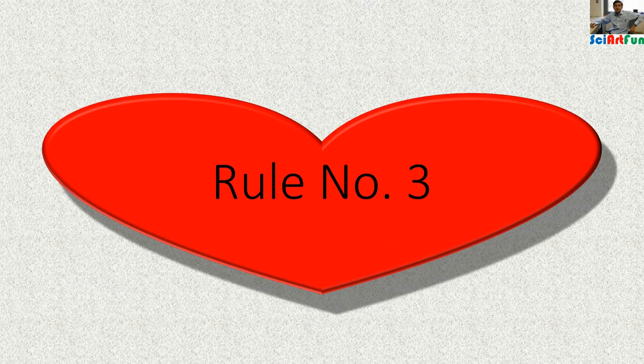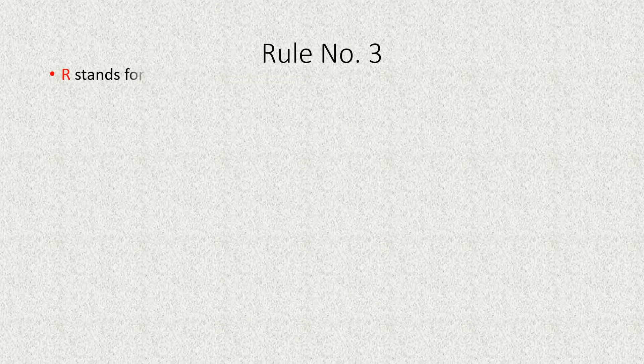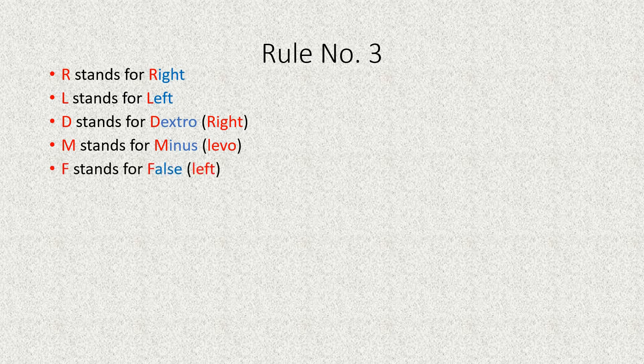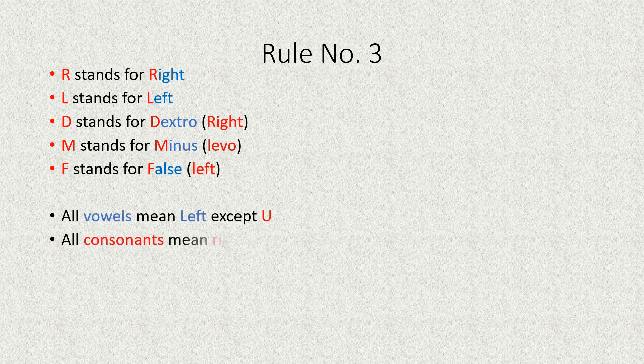Now let's apply rule number three. According to rule number three: R stands for right; L stands for left; D stands for dextro, which also means right; M stands for minus, meaning levo sugars; and F stands for false, meaning the hydroxyl groups are on the left side. All vowels mean left except U; all consonants mean right except L, M, and F.